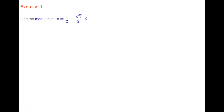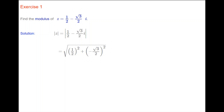Here's an exercise: find the modulus of the complex number Z which is equal to one half minus root 3 over 2 times i. Stop the video, take out paper, and have a go at working out that modulus. The answer is the square root of one half all squared plus minus root 3 over 2 all squared — don't forget the minus sign with the root 3 over 2. That comes out to be the square root of one quarter plus three quarters, which is the square root of 1, equal to 1.